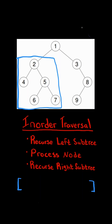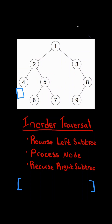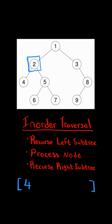So in this example, we first recurse on the left subtree, we further recurse on the left subtree, and again recurse on the left subtree. But there is no left subtree, so we process the parent node, and recurse on its right subtree. But its right subtree is null, so we go up the stack, and process the node, and recurse on its right subtree.